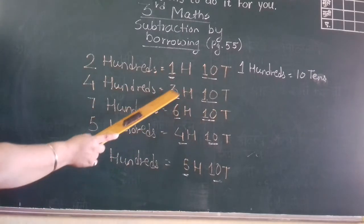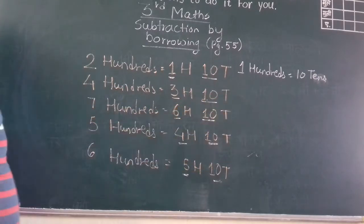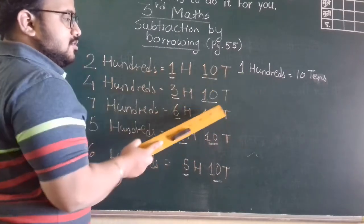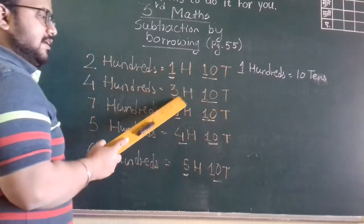Now see, four hundred means three hundred, ten tens. Ten tens means one hundred. So this is one hundred and this is three hundred.